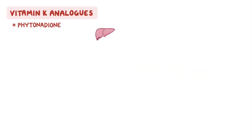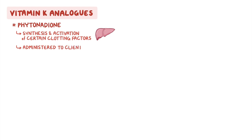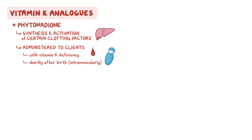Next, vitamin K analogs such as phytonadione are used by the liver as a cofactor for the synthesis and activation of certain clotting factors. Phytonadione is typically administered to clients with vitamin K deficiency, which makes them more susceptible to bleeding. Specifically, phytonadione is given shortly after birth intramuscularly as prophylaxis to prevent hemorrhagic disease of the newborn.